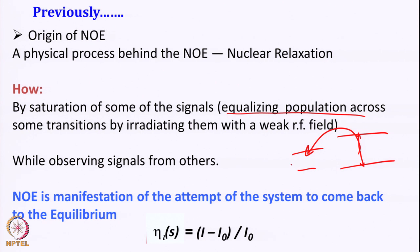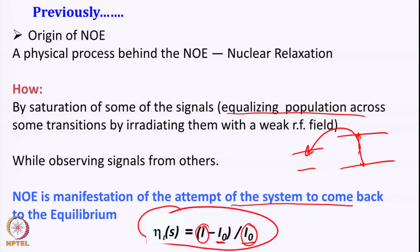NOE is essentially a manifestation of the attempt of the system to come back to equilibrium, and that is defined as η = (I − I₀) / I₀. Here, I is after perturbation, I₀ is the equilibrium magnetization, and that ratio with equilibrium magnetization is called the NOE enhancement factor.